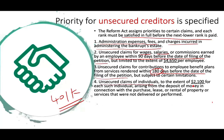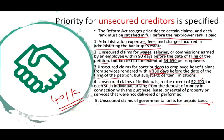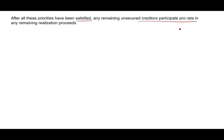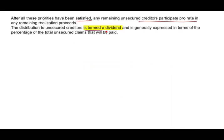Then come unsecured claims of individuals to the extent of $2,100 for each individual arising from the deposit of money in connection with the purchase, lease, or rental of property or services that were not delivered or performed. For example, if you made a deposit at a place and returned the item, they must give you your money back — you have priority after employees and their benefit funding. Finally, unsecured claims of governmental units for unpaid taxes come next, followed by any remaining general unsecured claims.